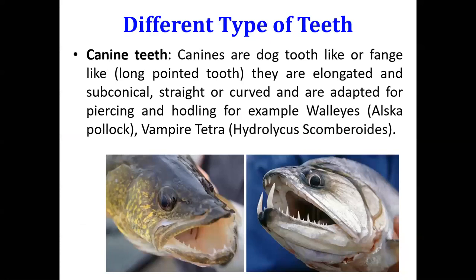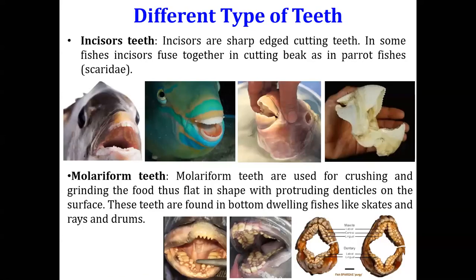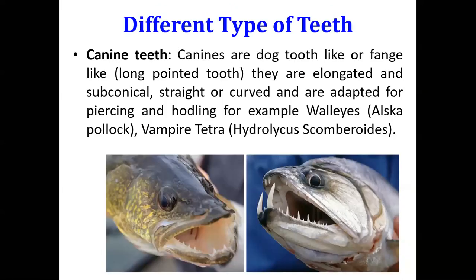The fifth type is canine teeth — fang-like, long, pointed teeth, generally the type of teeth we see in dogs. They are subconical, straight or somewhat curved, and adapted for piercing and holding. Examples include walleyes and vampire tetra. So the five types of teeth present on the jaw of fishes are: cardiform, villiform, incisor, molariform, and canine.